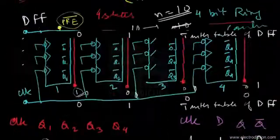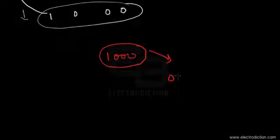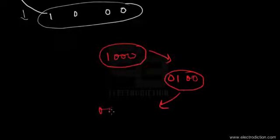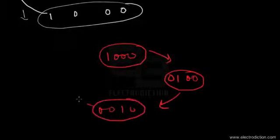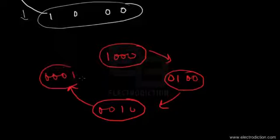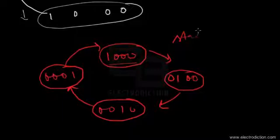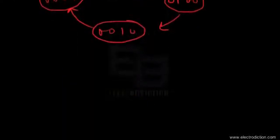The state diagram of the ring counter starts at state zero — one-triple-zero — then moves to state one — zero-one-double-zero — then to state two — double-zero-one-zero — and finally to state three — triple-zero-one — before cycling back to one-triple-zero. This circular progression represents the state diagram of the 4-bit ring counter.